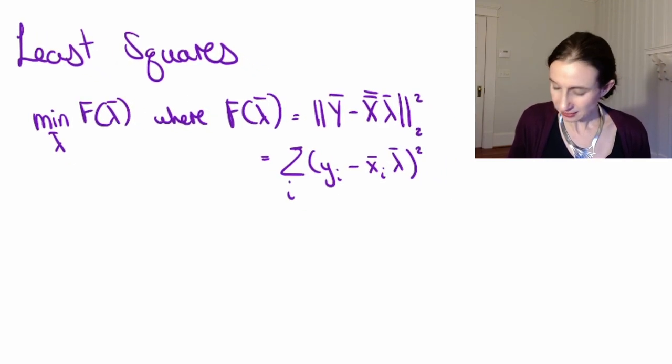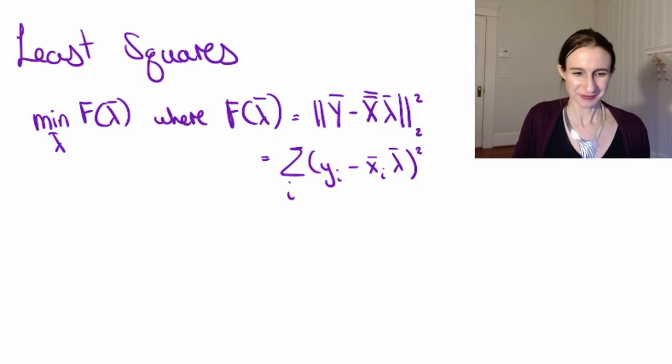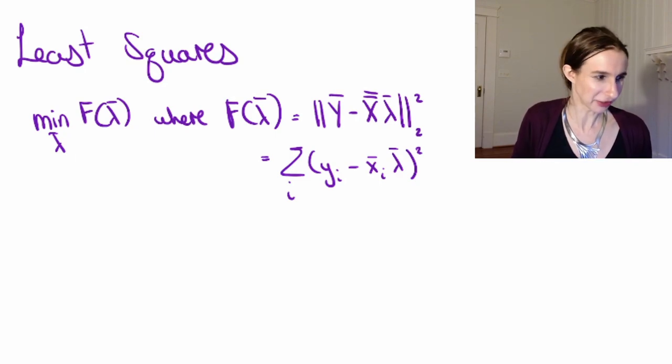All right, so how do I find that minimizer? Well, I'm going to take the gradient and set it equal to zero. I like to do one coordinate at a time just to make sure that all my multiplication is done correctly, and then I'll put it into gradient format later. Okay, so I'm going to take a derivative with respect to lambda j, and then we'll vectorize it to make it a gradient.